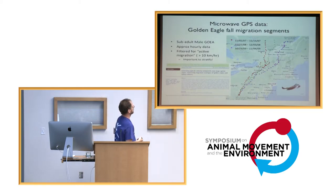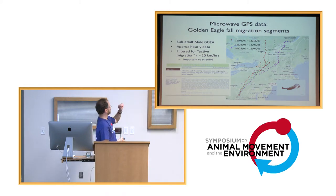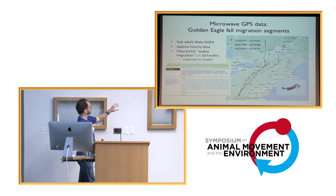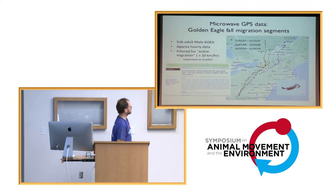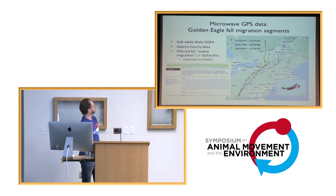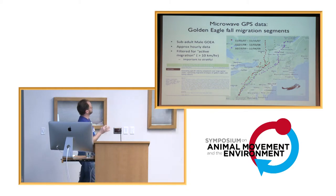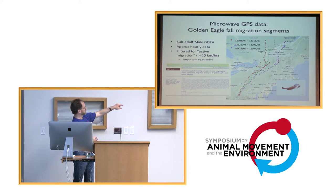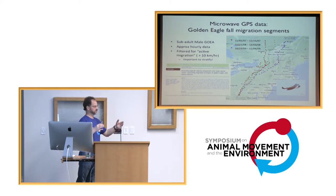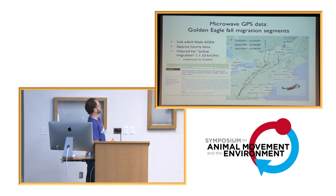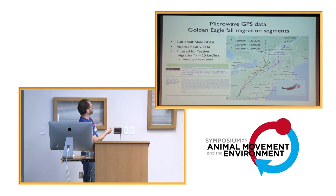Here's some data from the Ecology Letters paper that Gil and I and co-authors worked on. This shows three fall tracks from a sub-adult male golden eagle — a bird caught in a leg-hold trap in West Virginia, rehabbed and released, lived three or four years, then caught in another leg-hold trap in Quebec and didn't make it. It's approximately hourly data. I used GPS Visualizer to color the tracks. I filtered for points showing migratory speeds greater than 10 km/h before uploading.